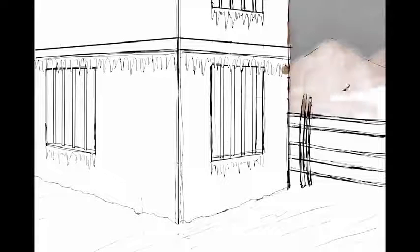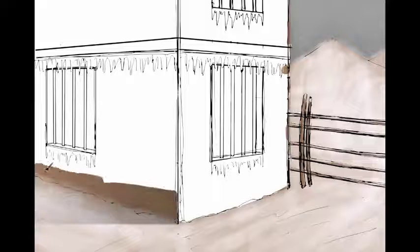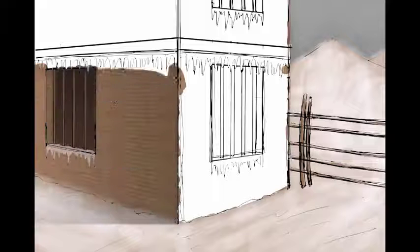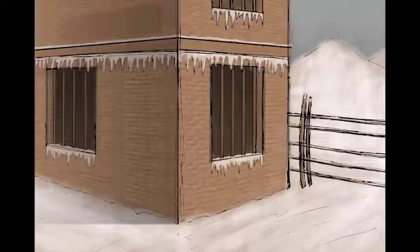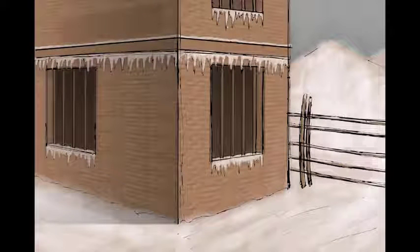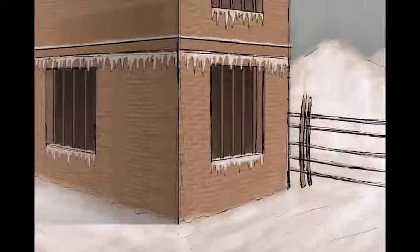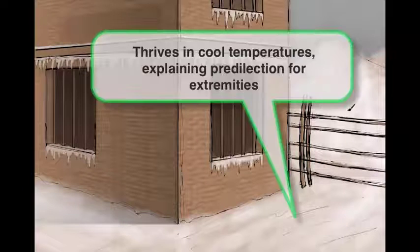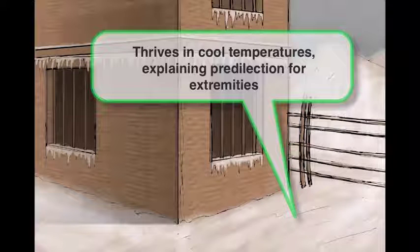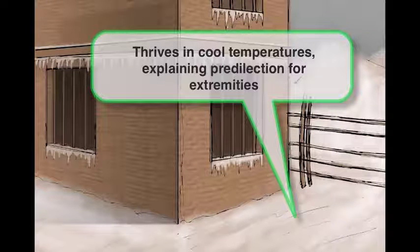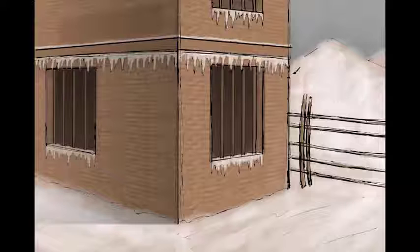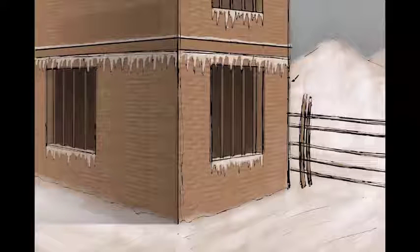Let's start with some general characteristics. You'll notice that there's snow on the ground and icicles on the buildings because our scene is taking place in wintertime. The reason we have it taking place in winter is because leprae thrives in cool temperatures, and you'll see later this gives it a predilection for the extremities of the body.